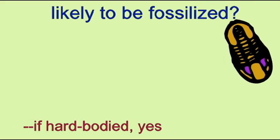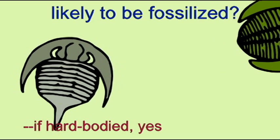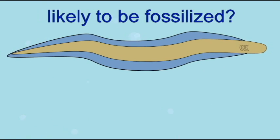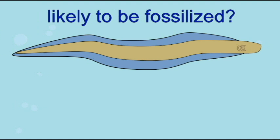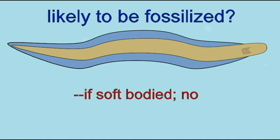not all organisms are as likely to be preserved. Organisms with hard parts are more likely to be represented in the fossil record. Soft-bodied animals may not preserve at all, and we may have no fossils of them.